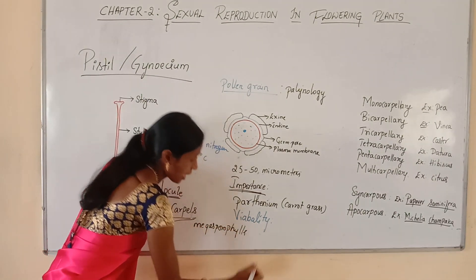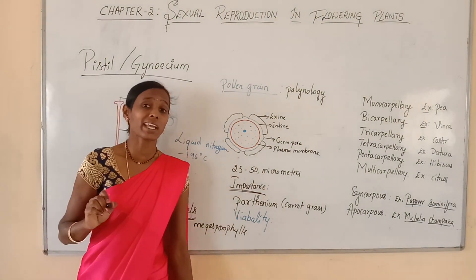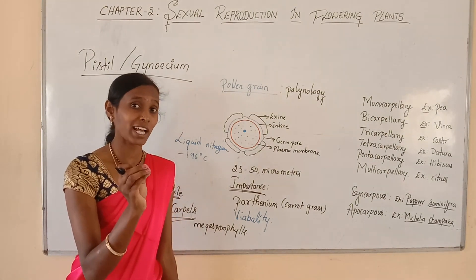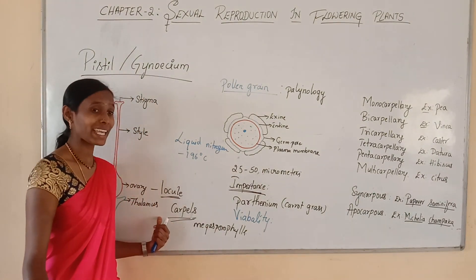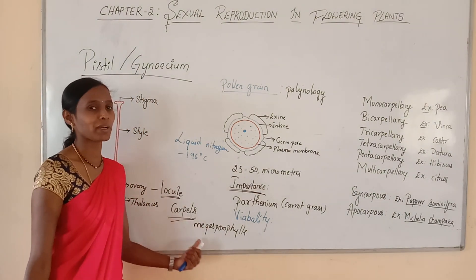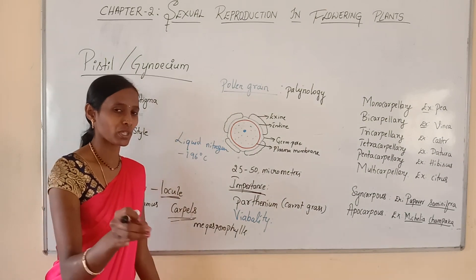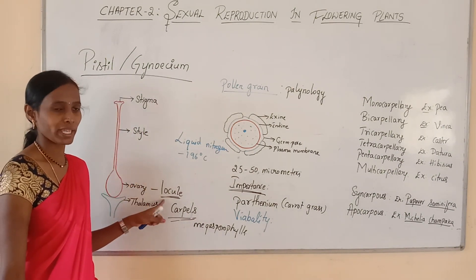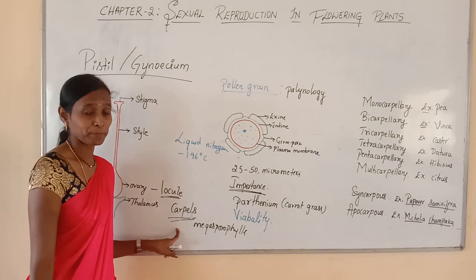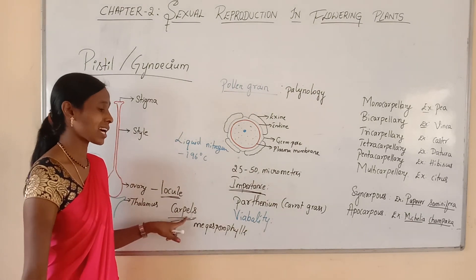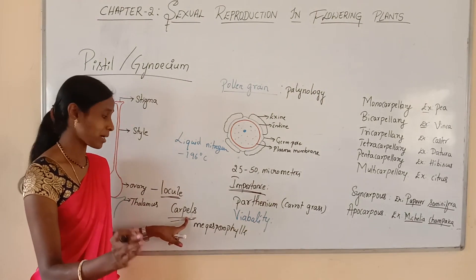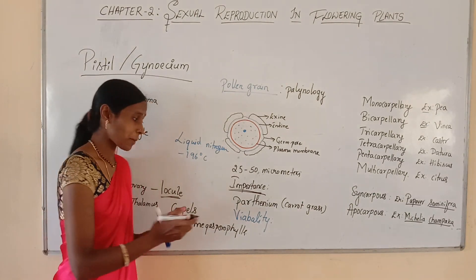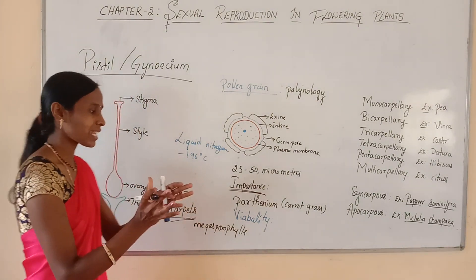Even in angiosperms, carpels are megasporophylls which usually contain the megasporangia — that is the ovules. Within the ovarian cavity called the locule, there is a parenchymatous cushion-like structure called the placenta.